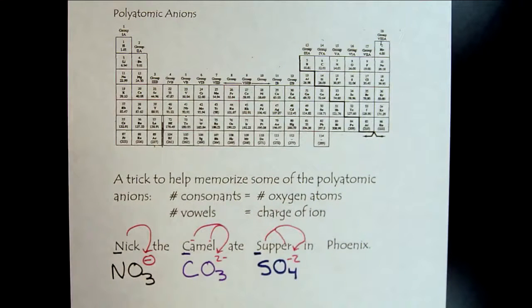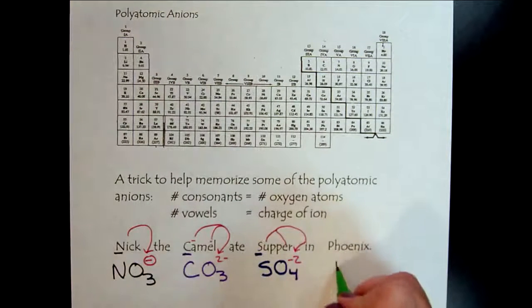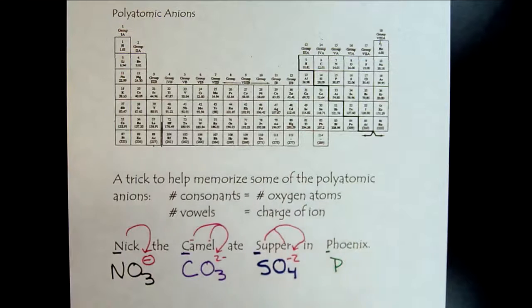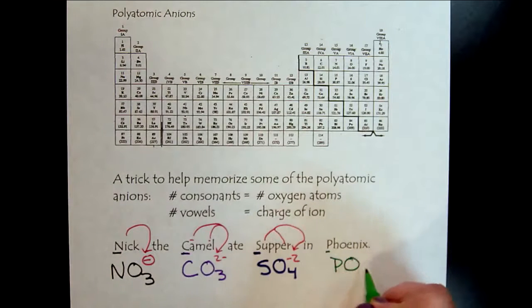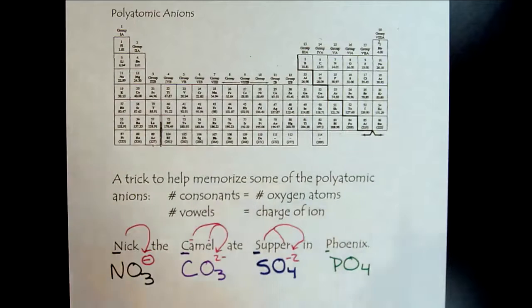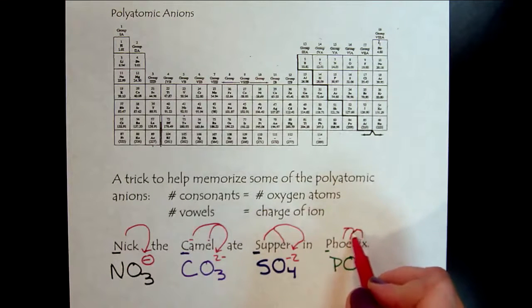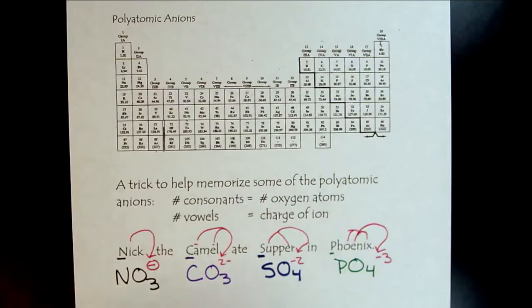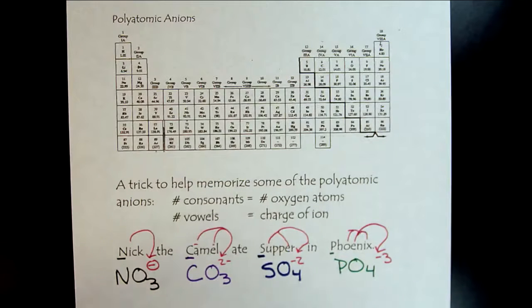And then last but not least, Phoenix. That would be for phosphate. So there's our phosphorus. One, two, three, four. Once again, four consonants. So four oxygen atoms. And then this time, one, two, three vowels. All coming together to make minus three. So if you need to, just quickly write at the top of your paper, you know, before a quiz or exam, Nick the camel ate supper in Phoenix. And then you can fill from there. Ultimately, you're going to practice enough. You're not going to need the trick. But if this helps you get started, then please take advantage of it.